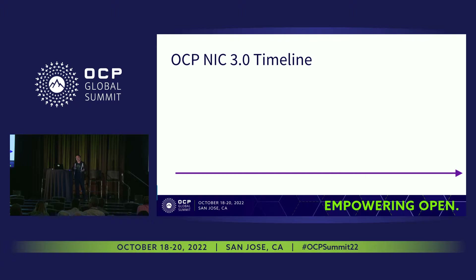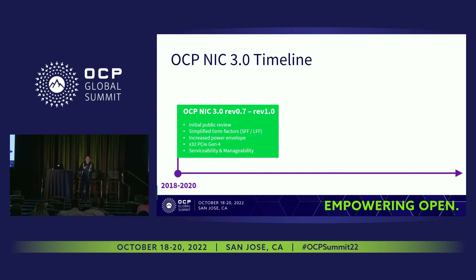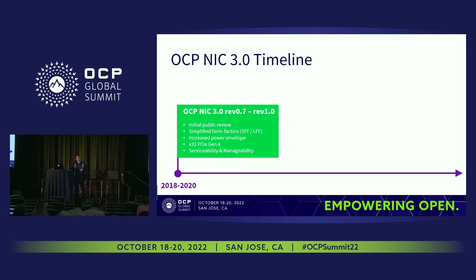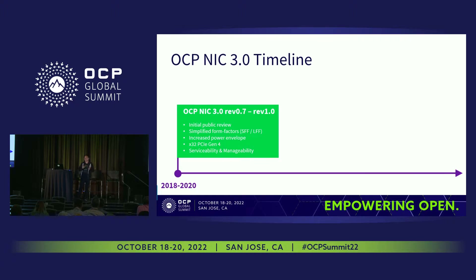A little background on the timeline. In 2020, we came up with the OCP NextUp 3.0 REF 1.0 spec. It has a simplified form factor of two form factors — small form factor and large form factor — each supporting 16 PCIe Gen4 and 32 PCIe Gen4. All of them have an increased power envelope, better serviceability, and better manageability compared to OCP NIC 2.0.